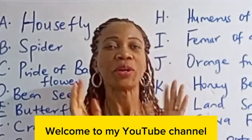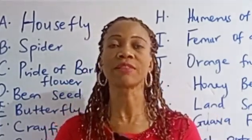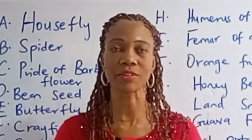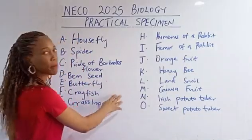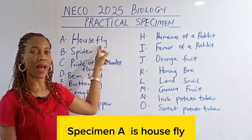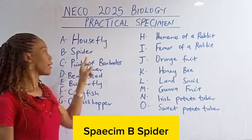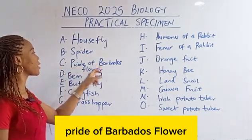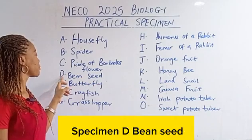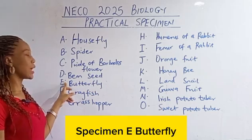Welcome to my YouTube channel. Today I want to show the 2025 NECO Biology practical specimens on the board. Specimen A is house fly, specimen B is spider, specimen C is pride of Barbados flower, specimen D is bean seed, specimen E is butterfly.